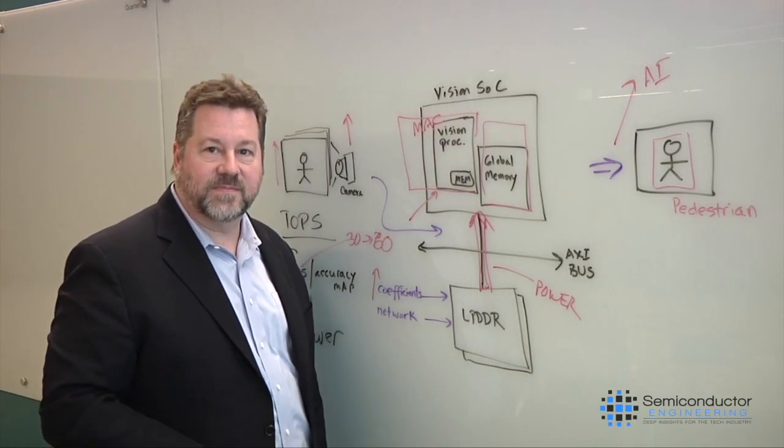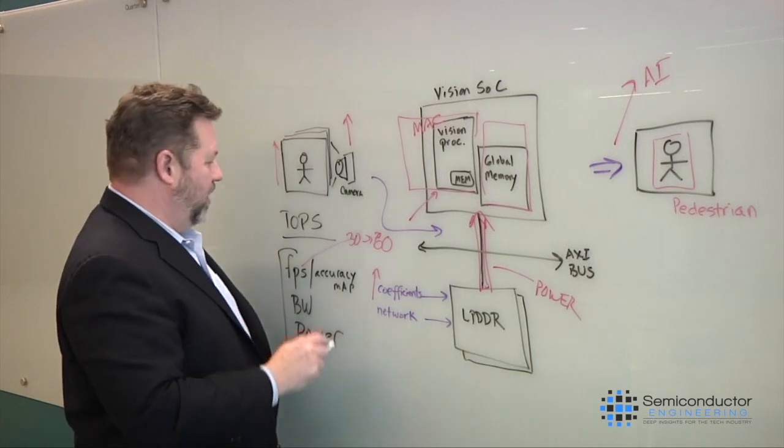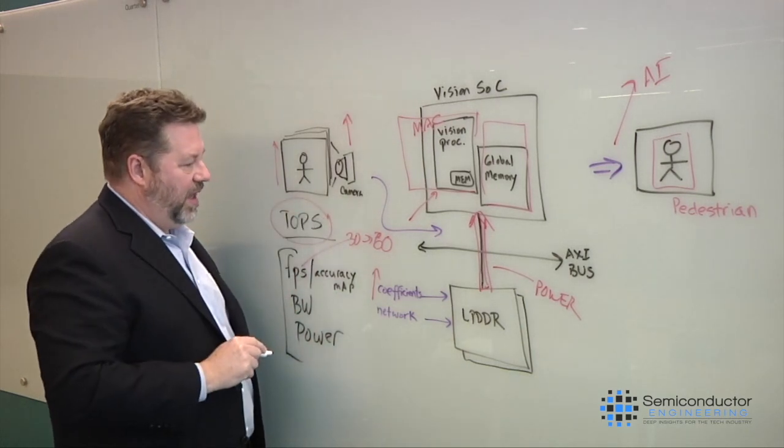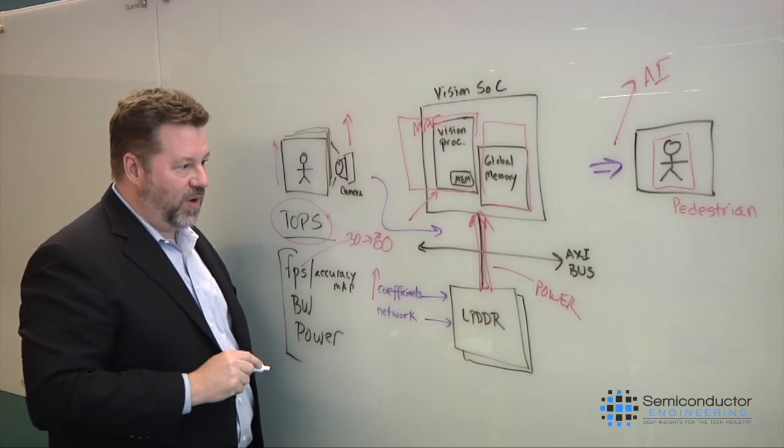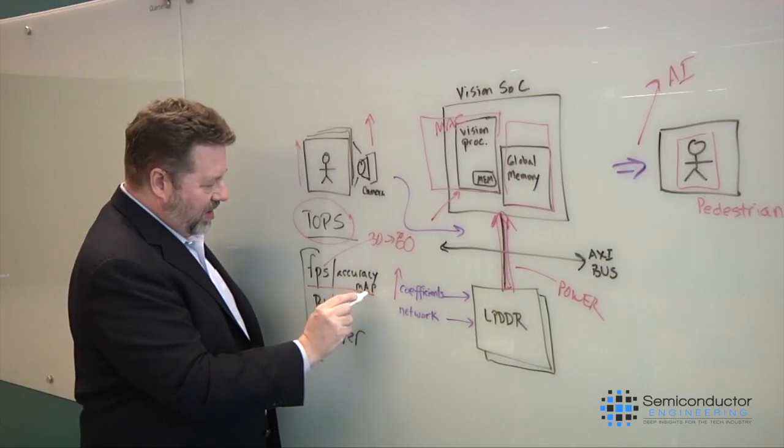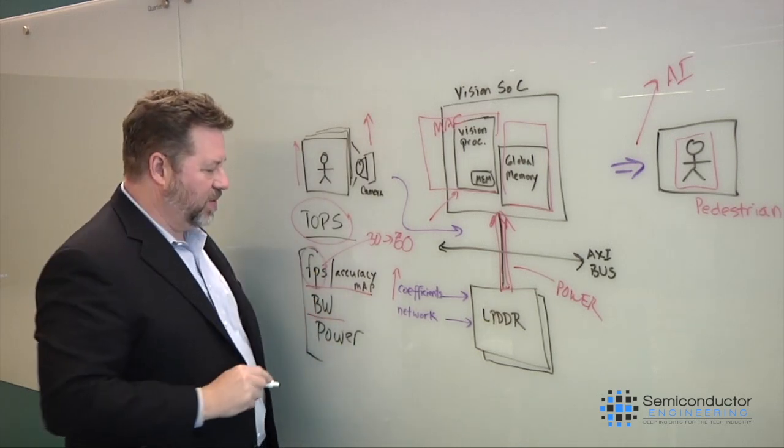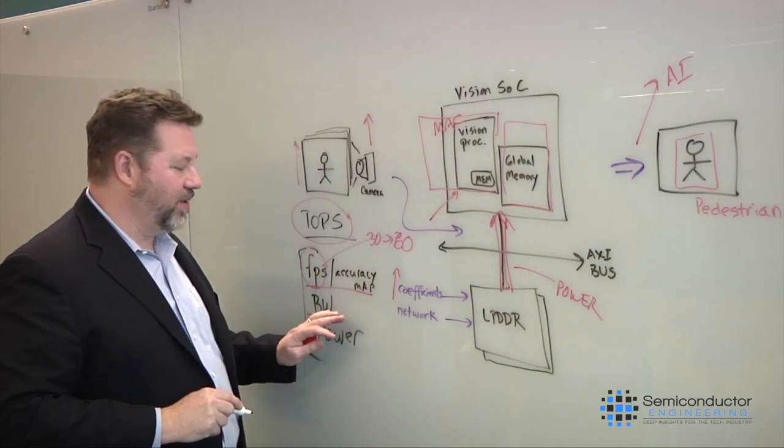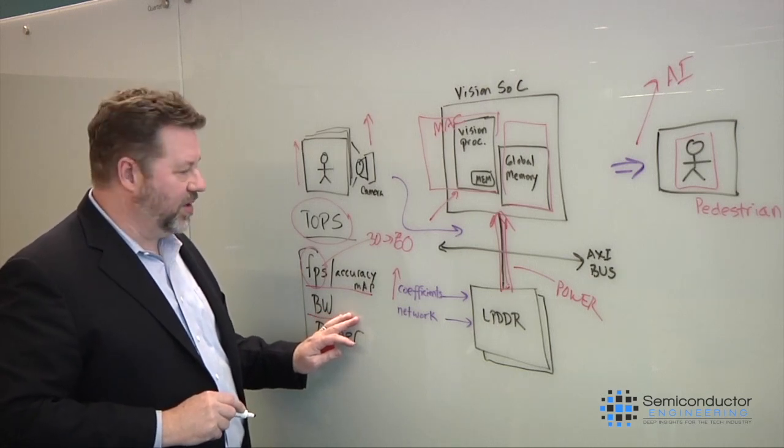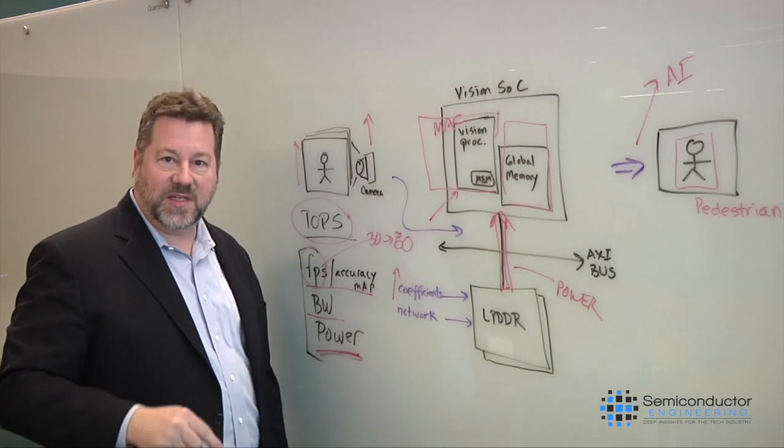Where do people make mistakes when they're doing this? You know, it's a good question. I think the biggest mistake, if you start with TOPS and using that as a benchmark, it's not as accurate as accuracy, frames per second, and bandwidth. So sometimes they'll start with just the frames per second and not look at the accuracy or the bandwidth, and that's going to kill you. But the other thing that's a problem is measuring accurate power in pre-silicon.